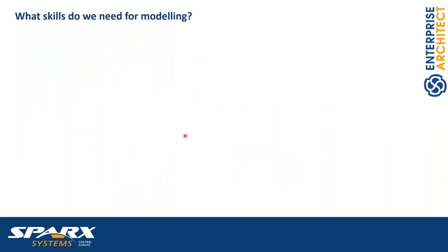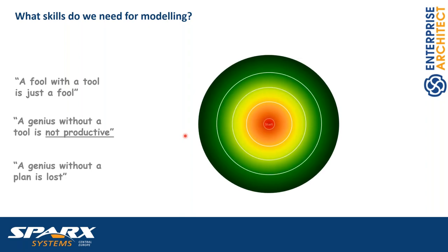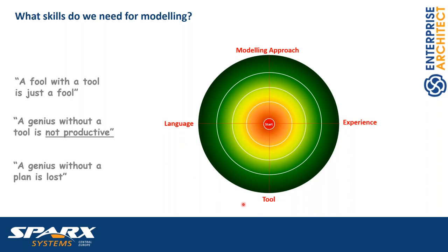What skills do we need for our modeling approach? A fool with a tool is just a fool. A genius without a tool is not productive, and a genius without a plan is lost. We have at least four dimensions: we have to know the language at a certain level, master the tool, and be able to use the language within the tool. Languages like UML or SysML have a lot of possibilities and different views — we can use them in different ways to express the same information.